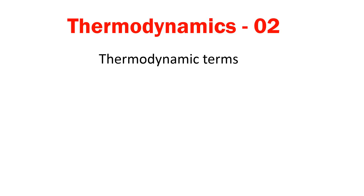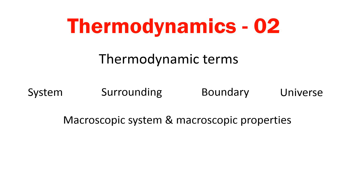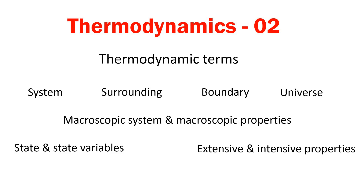What are those terms? System, surrounding, boundary, universe, macroscopic system and macroscopic properties, state and state variables, extensive and intensive properties, state function and path function. Out of all these terms, today we will discuss about system, surrounding, boundary and universe.